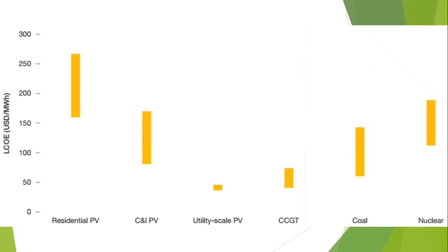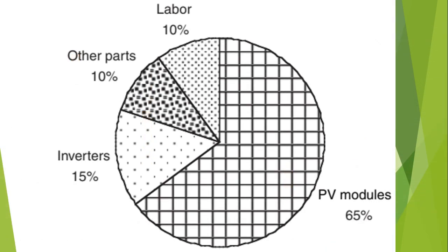This graph shows the comparison of the levelized cost of energy (LCOE). Since improvements have been made in renewable energy, the highest cost rating is for residential photovoltaic power plants, and the lowest is for utility-scale photovoltaic technology, which compares favorably to nuclear energy. Regarding module cost breakdown: 65% is the photovoltaic modules, 10% is labor, 10% is other parts, and 10% is the cost of inverters.